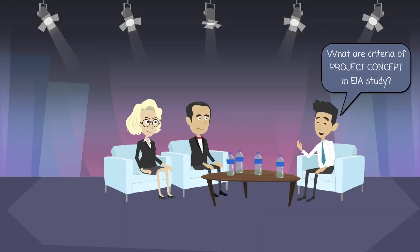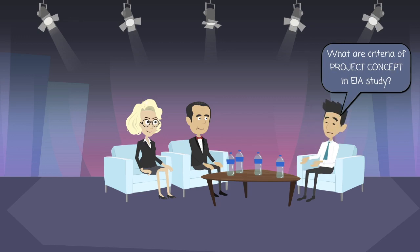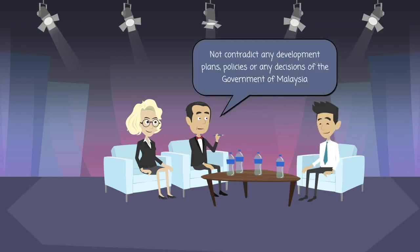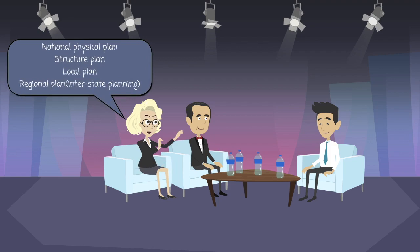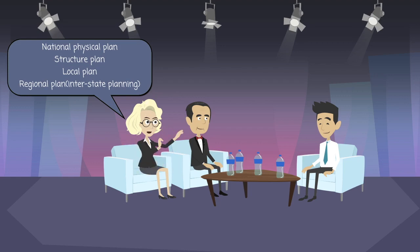What are the criteria for project concept in environmental impact assessment study? The project proponent must make sure that the concept of the proposed project does not contradict any development plans, policies, or decisions of the government of Malaysia prior to the EIA study. There are several criteria to understand in project concepts, such as national physical plan, structure plan, local plan, regional plan, and interstate planning.